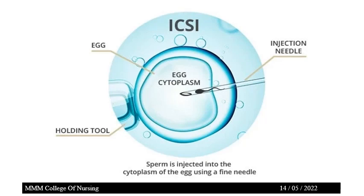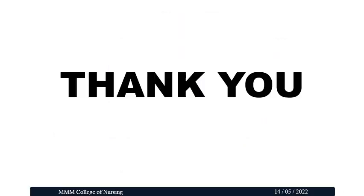To conclude, PCOS is a condition involving hormonal imbalance that can interfere with ovulation. Some people with PCOS have difficulty getting pregnant, but there are effective treatments. With medical interventions, many people with fertility problems due to PCOS are able to conceive. It is also important to note that PCOS doesn't mean you can never get pregnant — always use contraception if you don't want to conceive, even if you have PCOS. I hope you have gained some knowledge about PCOD or PCOS. Thank you for listening.